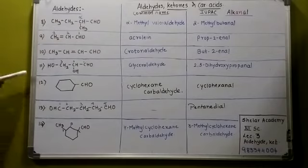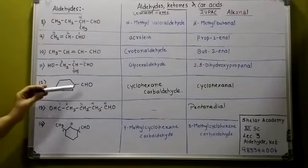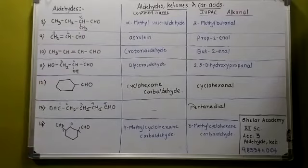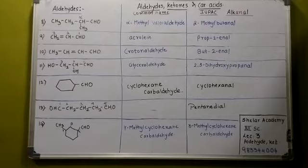Now, when it is a cyclic structure, the group is called as carbaldehyde. Remember — it is called carbaldehyde. So the common name of the compound is cyclohexane carbaldehyde. Carbaldehyde is also accepted in IUPAC nomenclature, so we can write it as cyclohexane carbaldehyde. That is the IUPAC name of the compound.